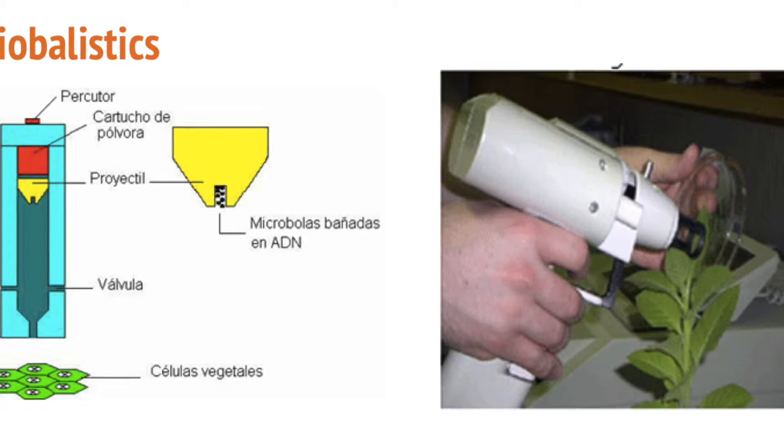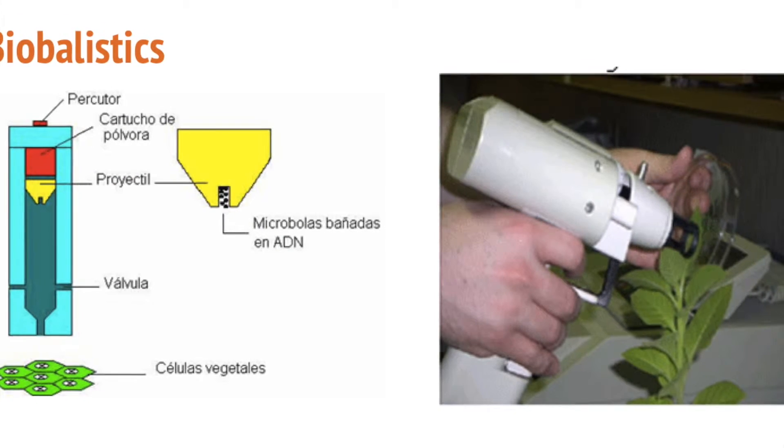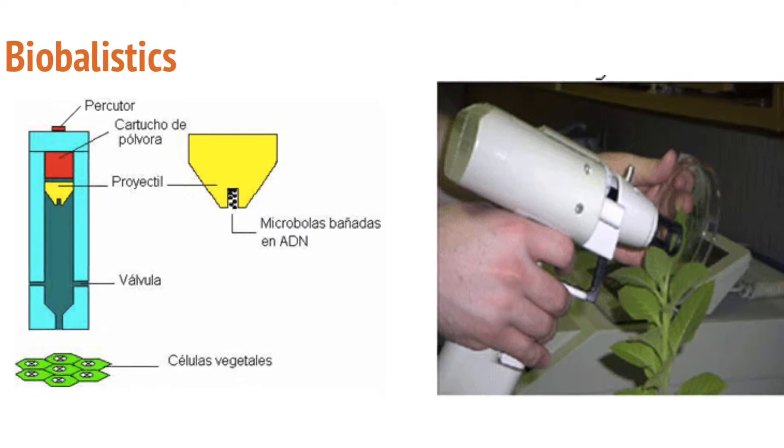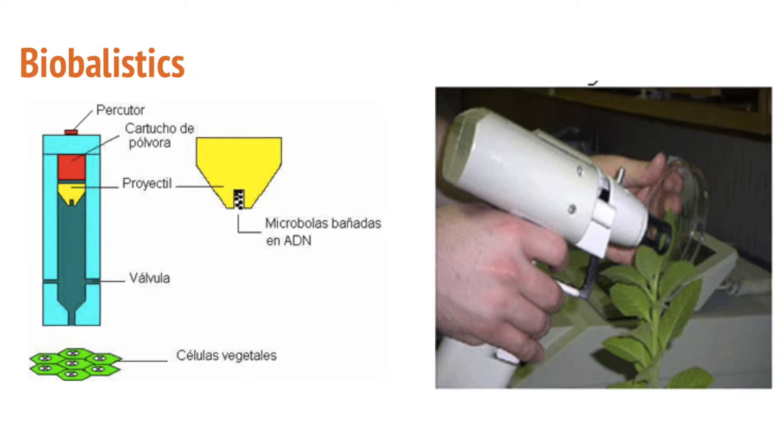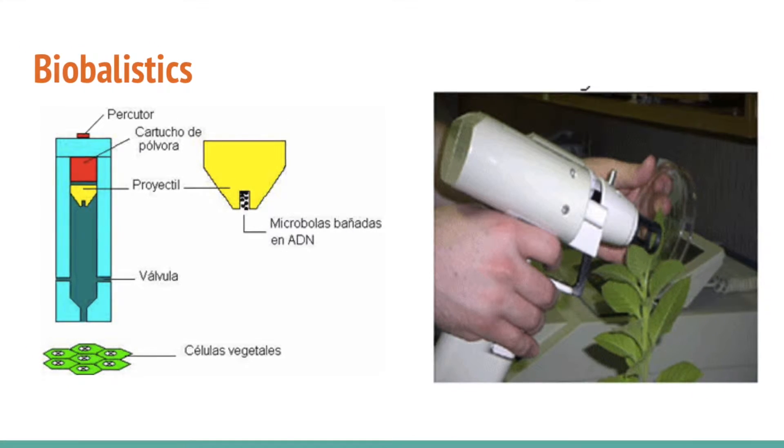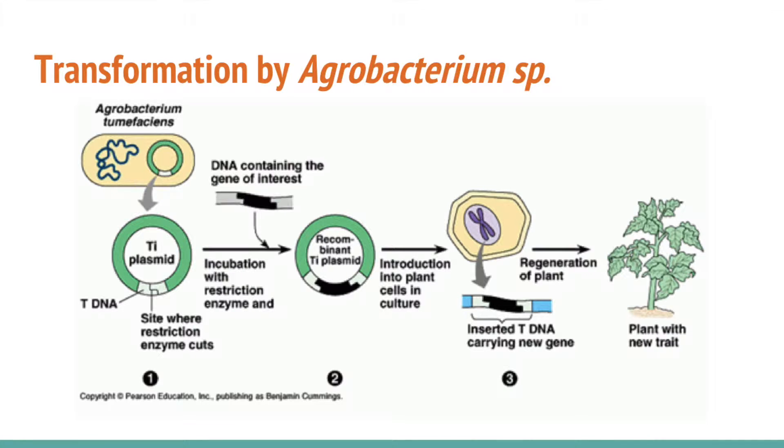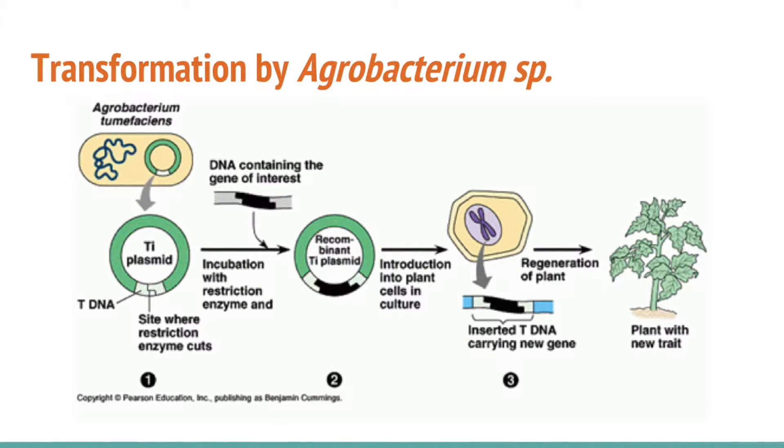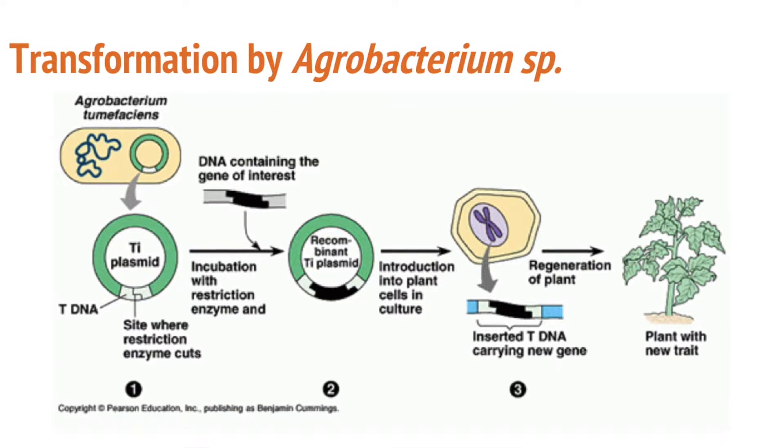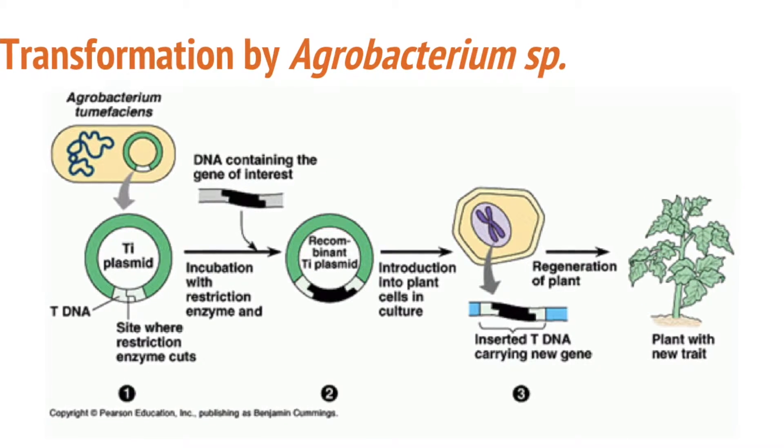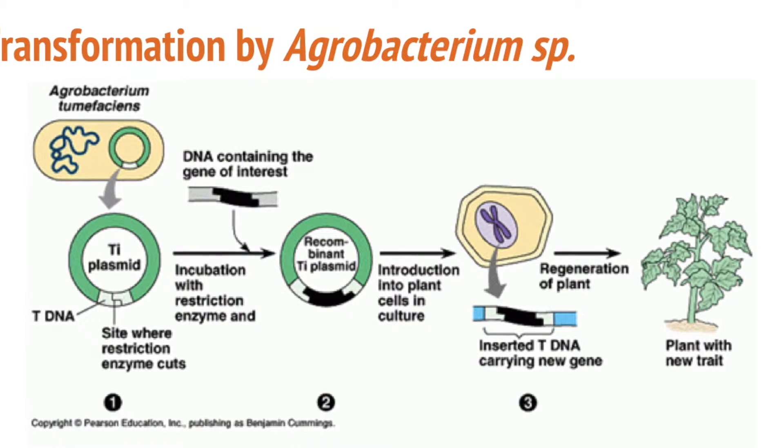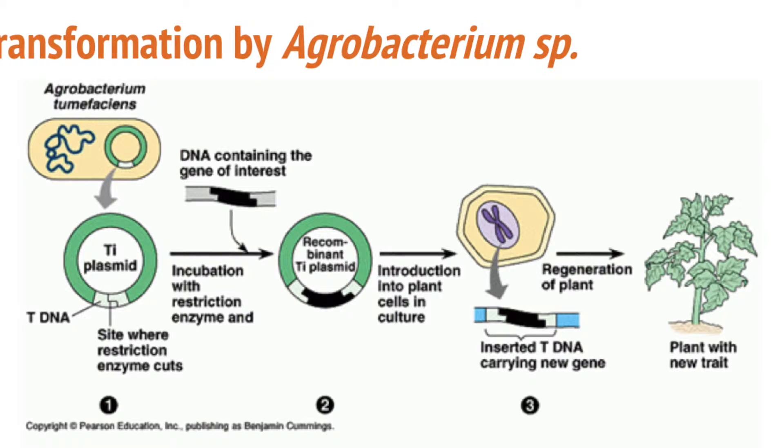Some methods for the transfection of eukaryotic cells include bioballistics, which is a mechanical method that works like a gene cannon. DNA is bound to gold or tungsten particles and then deposited in a machine that uses compressed air to introduce the pellets into the cells. The use of Agrobacterium species - this method uses the natural mechanism of virulence of the bacteria to induce either tumors or hairy roots in plants. By altering the information in the Ti or Ri plasmid, it is possible to obtain products of interest in plants.